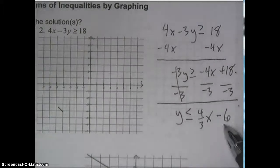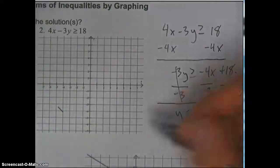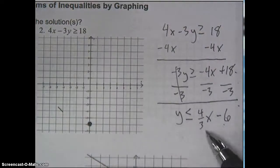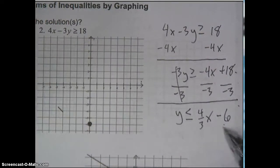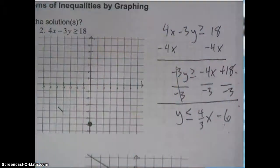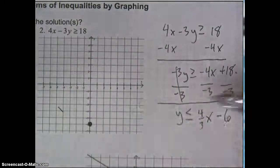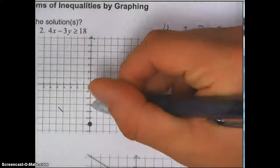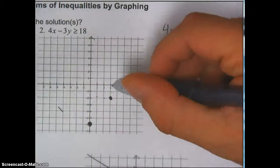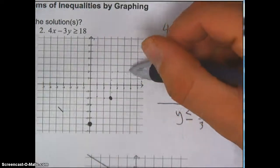You should always start with the y-intercept. Start with that negative 6 and mark the y-intercept. Your slope is right in front of the x because this is slope-intercept form. So this means go up 4 and over 3. Up 1, 2, 3, 4, over 1, 2, 3. Up 1, 2, 3, 4, over 1, 2, 3.